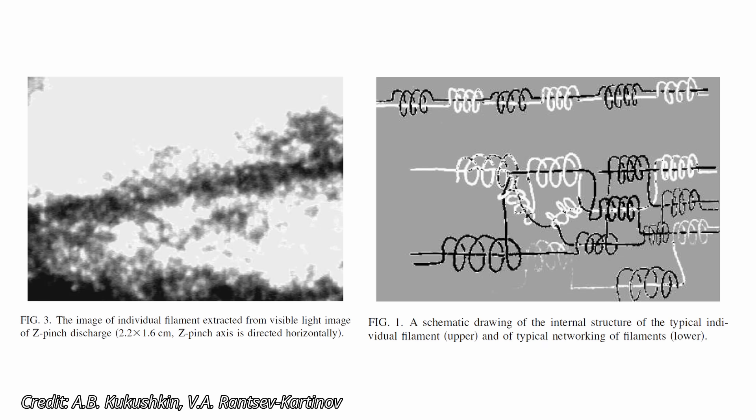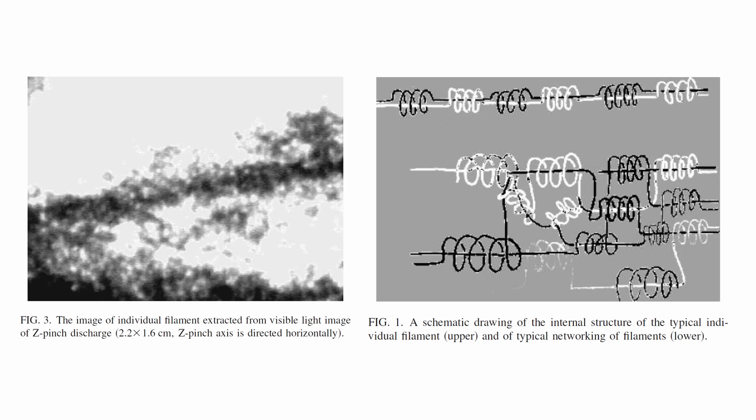Instead of a single current flowing evenly through the plasma, they saw the currents breaking up into dozens of narrow filaments. And these filaments were not isolated. They connected and branched in a complex three-dimensional network. They described these networks as resembling woven stockings or a complex web of interconnected threads. More importantly, these networks were stable. They persisted throughout the discharge, maintaining a consistent width, and they organized themselves without any outside intervention.